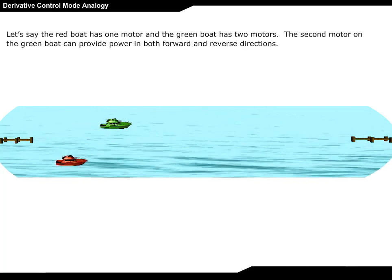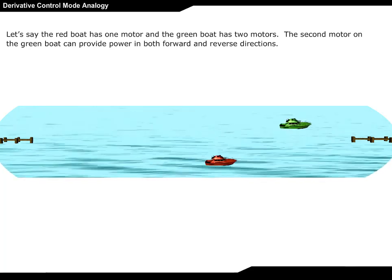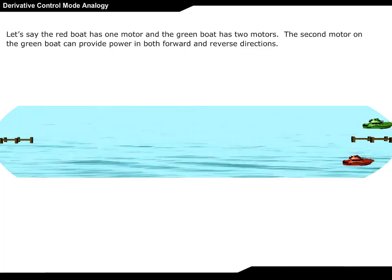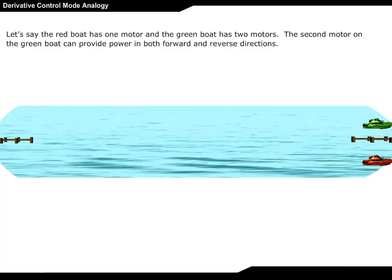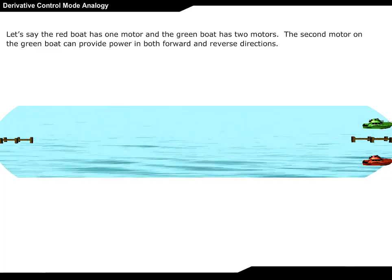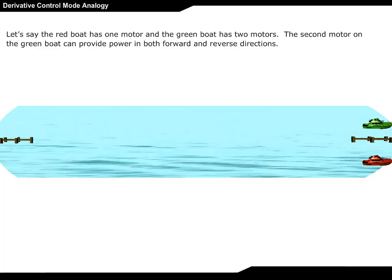Let's say the red boat has one motor and the green boat has two motors. The second motor on the green boat can provide power in both forward and reverse directions.